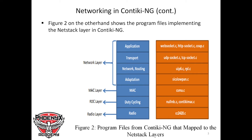At the network and routing layer, we have microip6.c and rpl.c — RPL being the routing protocol used. For the adaptation layer, we have 6lowpan.c, which is the IPv6 Low-Power Wireless Personal Area Network implementation. At the MAC layer, we have csma.c — Carrier Sense Multiple Access with Collision Detection.